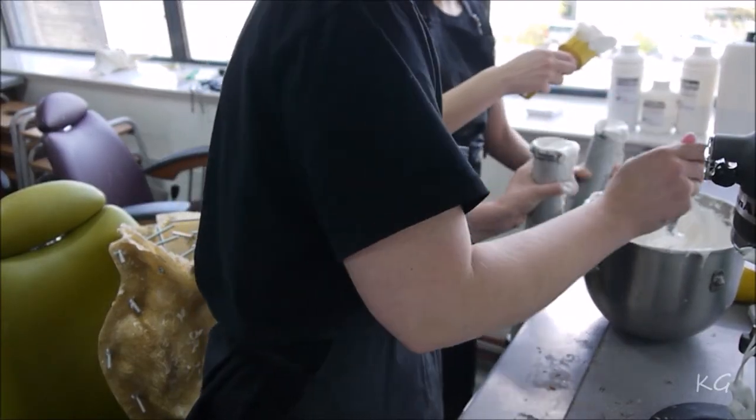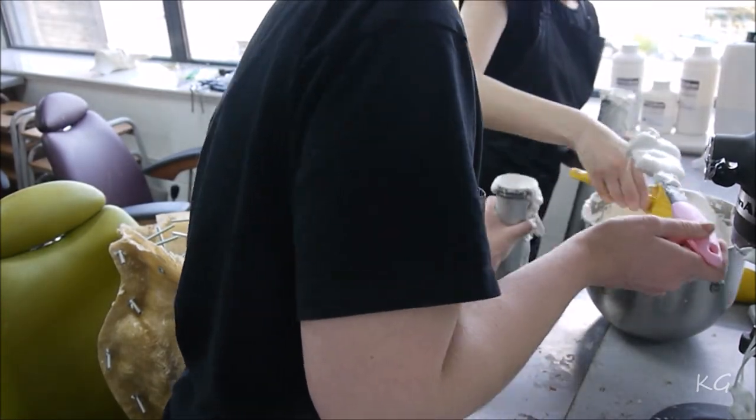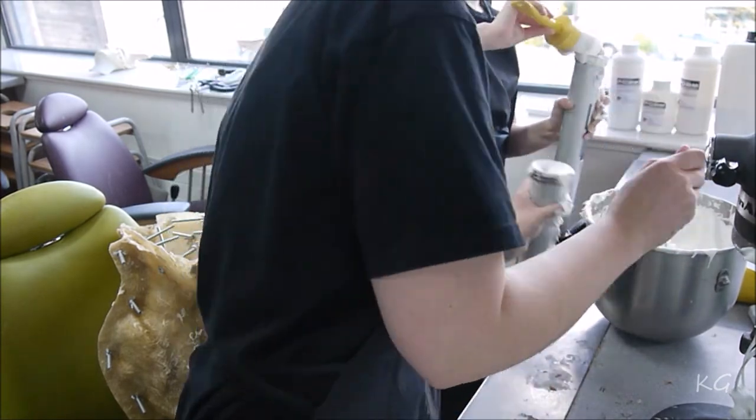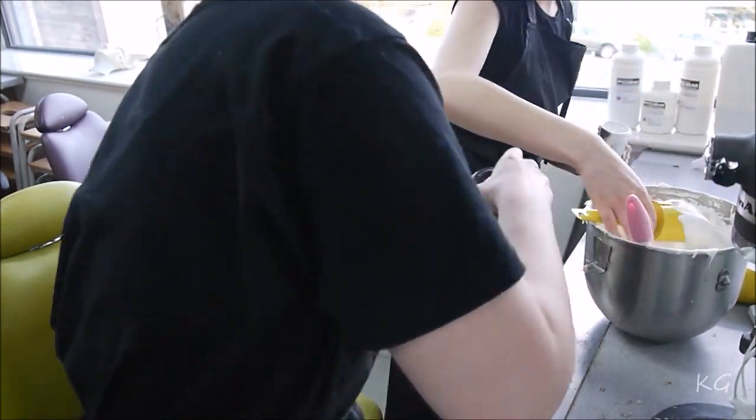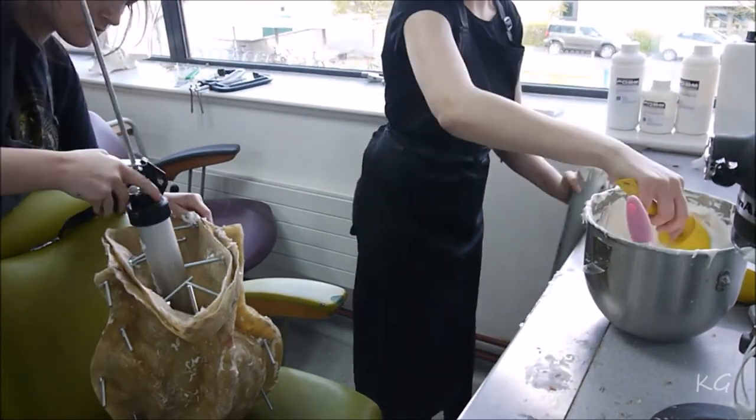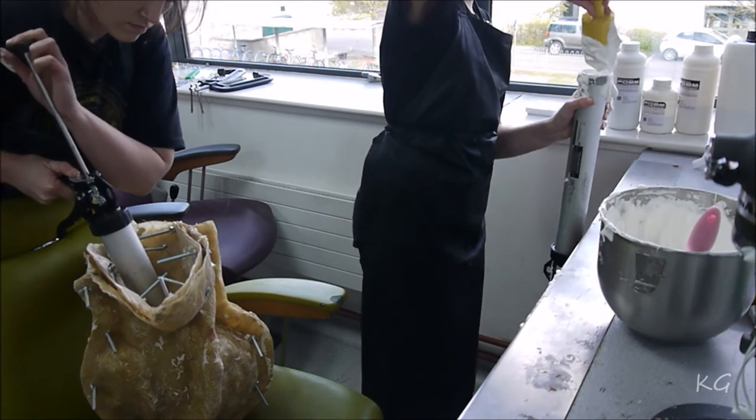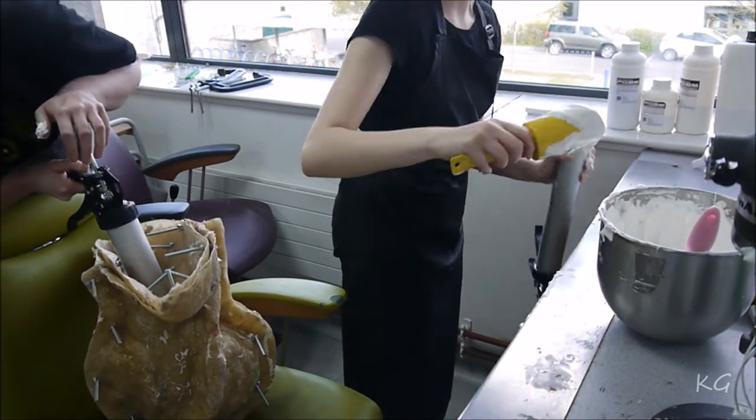Once I'd made sure the gelling agent was mixed into the foam really thoroughly, I started filling up the foam guns. It's really handy to have a friend here to help you because this stuff can cure really quickly. Once I filled the gun, I twisted on the top and injected it into the mold. When doing this, you want to push it really smoothly so that you don't get any air trapped inside.